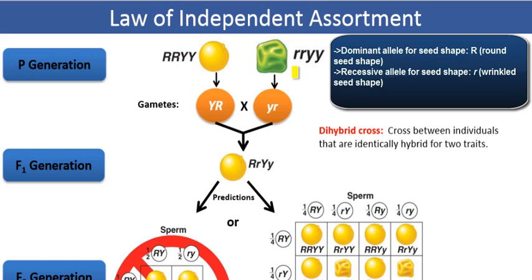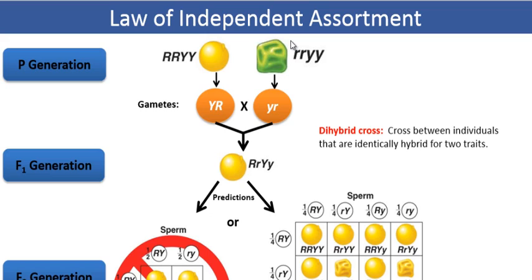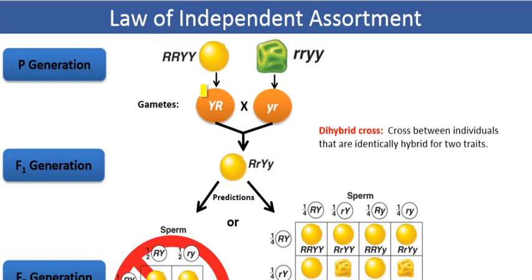The small r represents the wrinkled seed shape, which is the recessive allele. During gamete formation — the formation of eggs and sperm, or pollen in this case — pure-breeding parental lines can each only produce identical gametes, which carry alleles for either the dominant or the recessive phenotype. The parental line that has yellow and round seeds will only produce gametes that have the dominant alleles for seed color and seed shape.